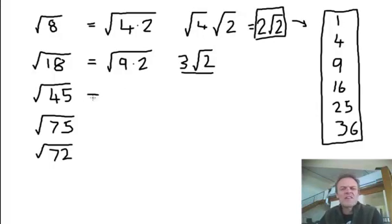What's 45 got in it? Again, you look over here. 9, right, 45 is 9 times 5. I can square root the 9, that's 3. And it'll leave me with a root 5.